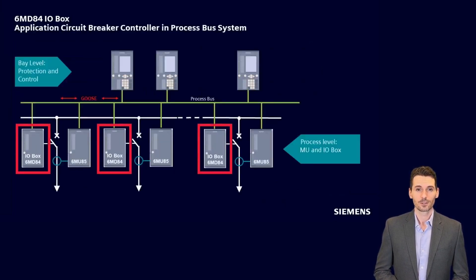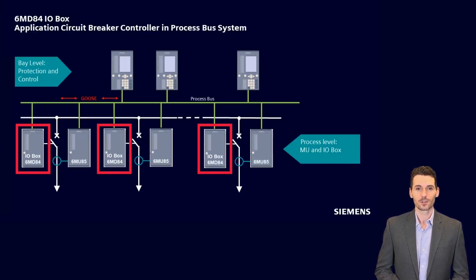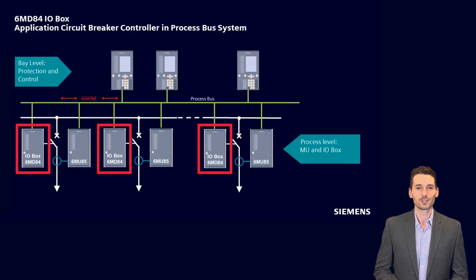In the application Circuit Breaker Controller and Process Bus System, the 6MD84 IO Box is installed at process level in the substation, like the merging unit 6MU85. Via IEC 61850 GOOSE, the position of connected circuit breakers and disconnectors is sent to the bay level, and commands from the bay level are processed in the 6MD84 and forwarded to the switching devices. With this application, hardware redundancy on process level can be built for control and measuring.